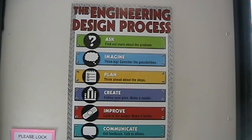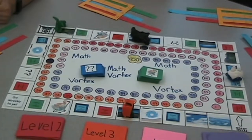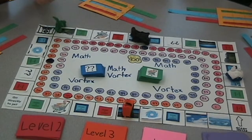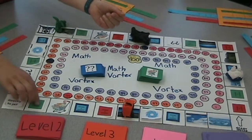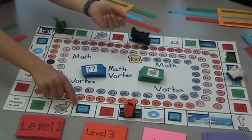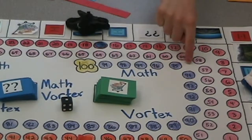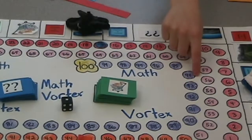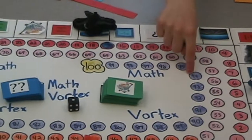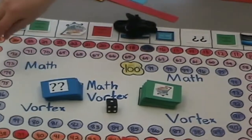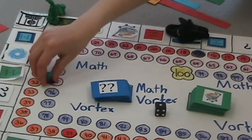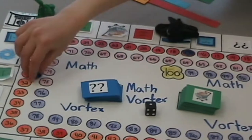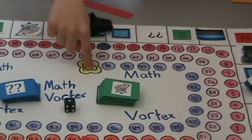We improved the game as we went along. In Math Vortex, you travel around the outside spaces by rolling one die. Each space on the outer ring decides what action you take. The inside track of the board has numbered circles called levels. You move a colored disc from level to level based on different cards. You win by getting to 100.